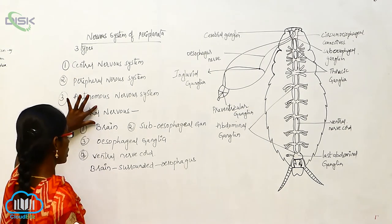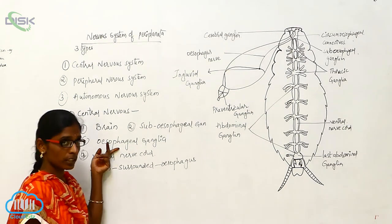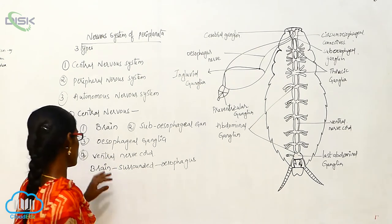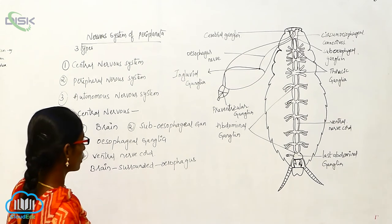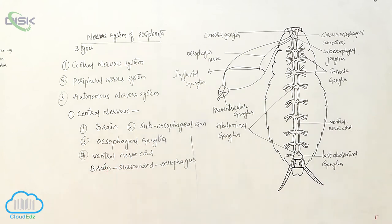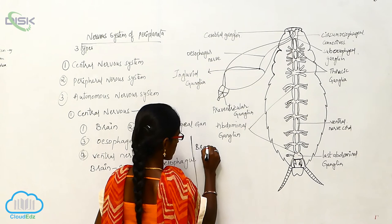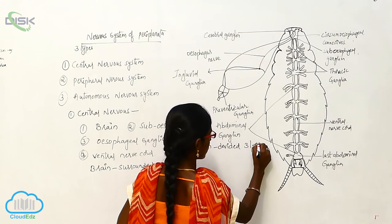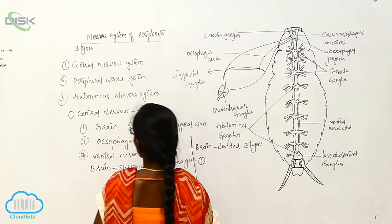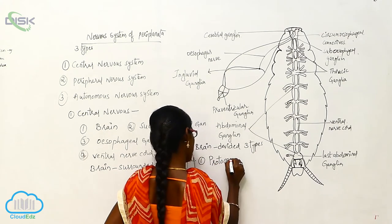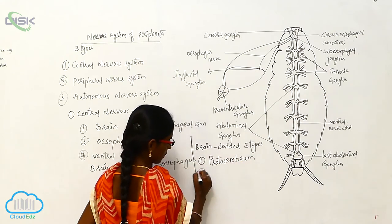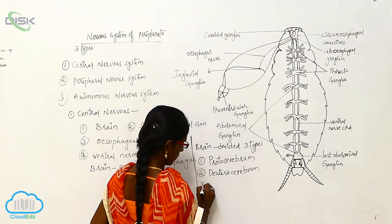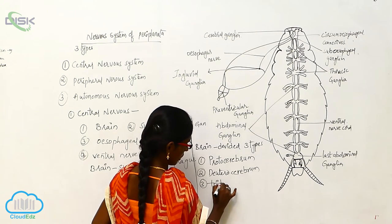The central nervous system includes the brain, subesophagal ganglia, esophagal ganglia, and ventral nerve cord. The brain is surrounded by the esophagus and is divided into three parts: protocerebrum, deuterocerebrum, and tritocerebrum.